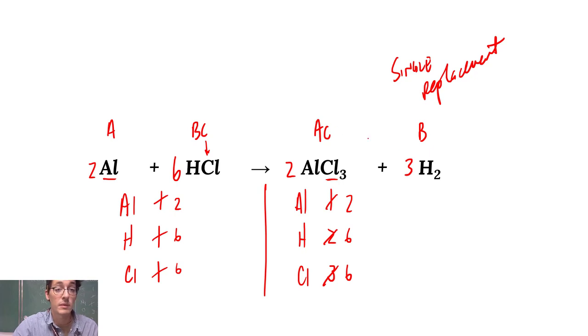So single replacement follows that pattern. A, BC gives you AC, or some other combination. It could be AB with C thrown off on its own, doesn't matter. So that's how you determine reaction type. Remember, there's five types. Pay attention to those patterns. I'll do some more worked examples in a future video. Thanks for watching.